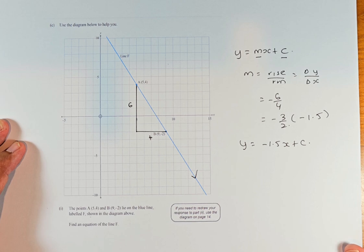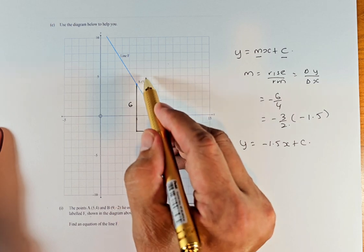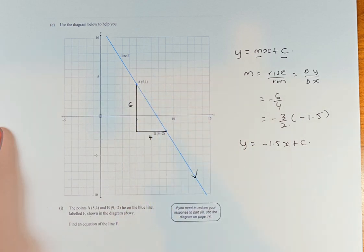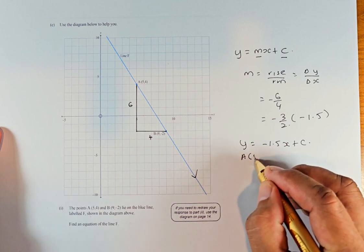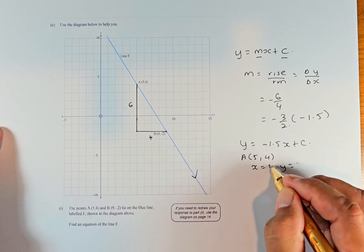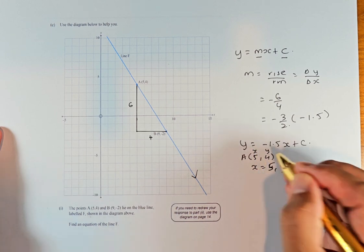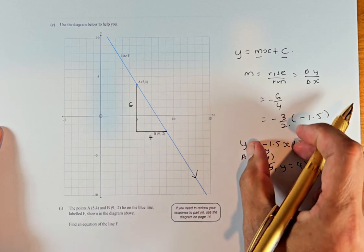The next job we're going to do is to find the value of C. To find the value of C is quite straightforward. You can either use point A or B. Because A is both positive, we're going to use point A. So point A is (5,4). X equals 5 and Y equals 4, because this is written as XY. We're going to substitute this into that equation.